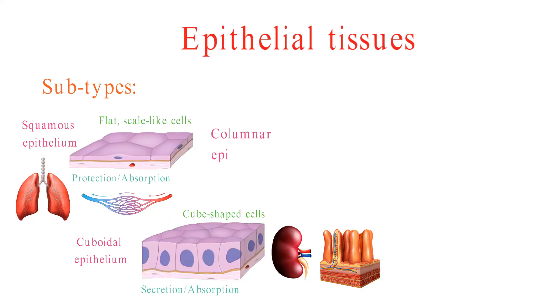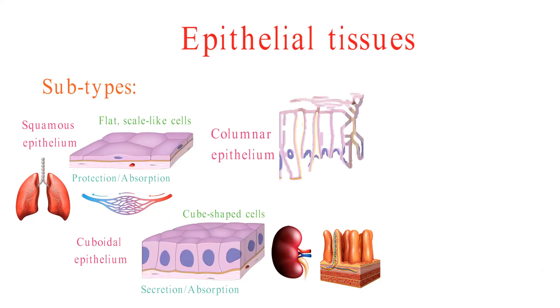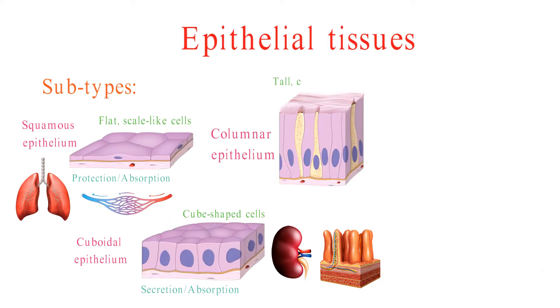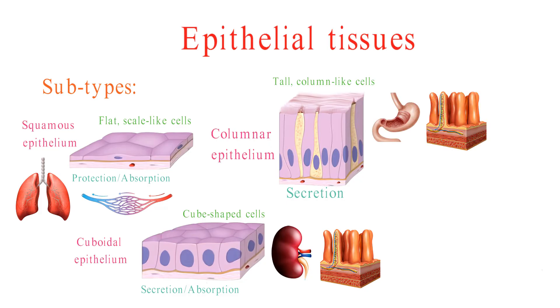Columnar epithelium is made up of tall, column-like cells. It is found in areas where there is a need for secretion, such as the lining of the stomach and the intestines.